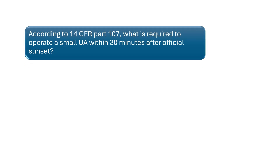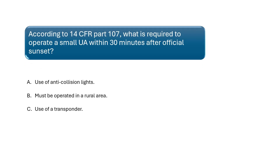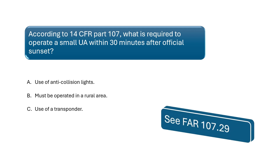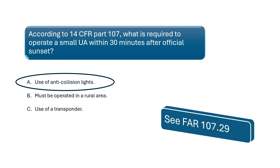According to CFR Part 107, what is required to operate a small unmanned aircraft within 30 minutes after official sunset? According to CFR Part 107.29, no person may operate a small unmanned aircraft system at night unless the small unmanned aircraft has lighted anti-collision lighting visible for at least 3 statute miles that has a flash rate sufficient to avoid a collision.